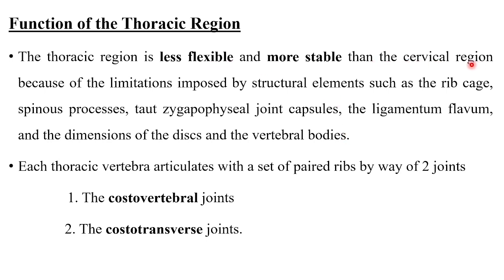All the ligaments present in the cervical region are also present in the thoracic region, along with the facets, zygapophysial joint capsules, bone alignment, and facet orientation. The main factor restricting motion is the rib cage. Because of all these factors, the range of motion is limited in the thoracic region and stability is higher.